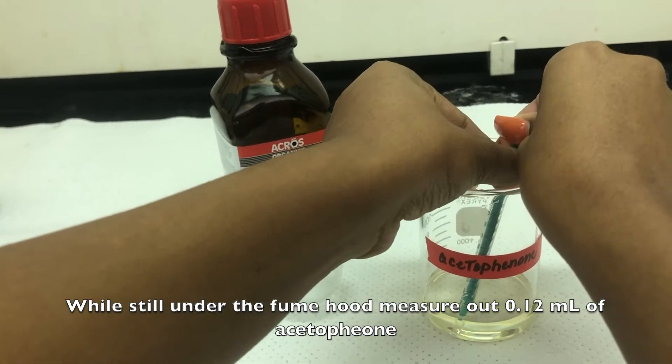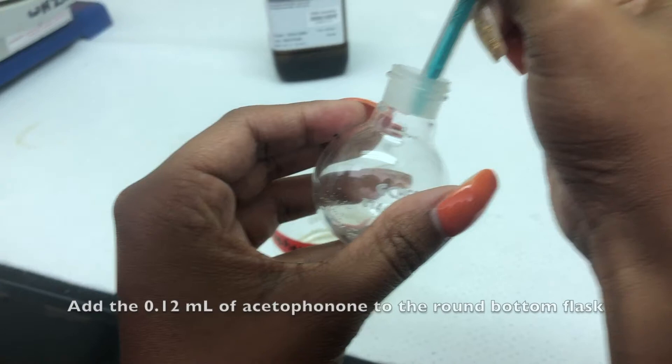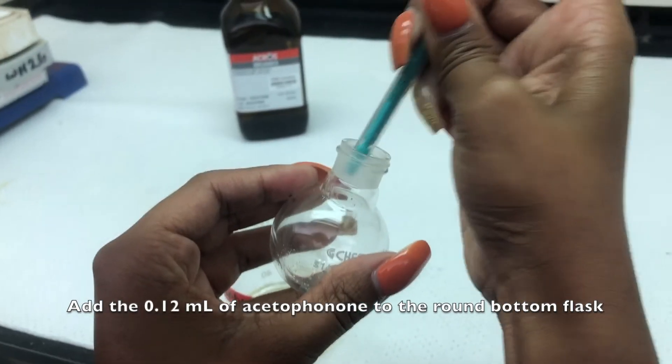While still under the fume hood, measure out 0.12 milliliters of acetophenone. Add it to the round bottom flask.